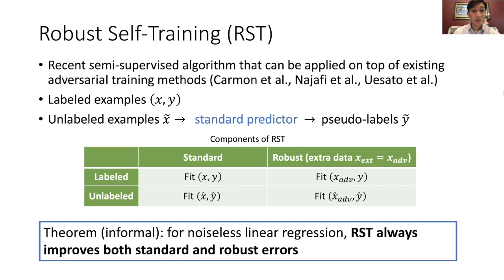We've proved in our paper that not only can RST eliminate the trade-off in our simple example from before, RST always improves both the standard and robust errors generally in the noiseless linear regression setting, therefore eliminating the trade-off.